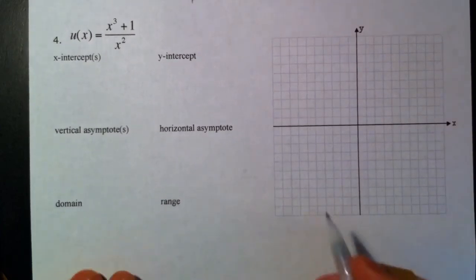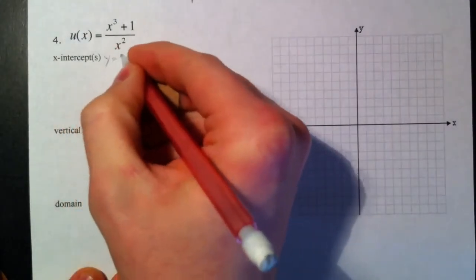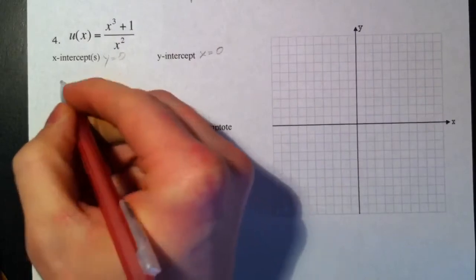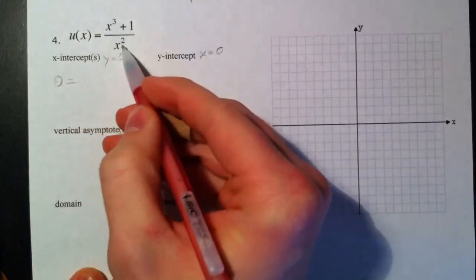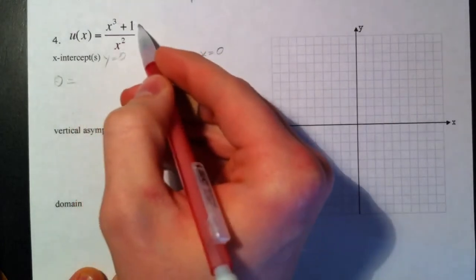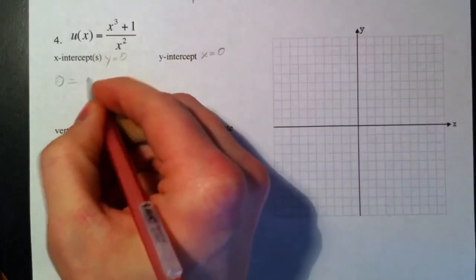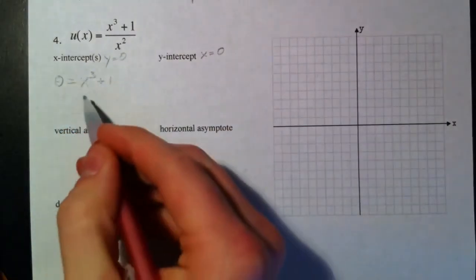All right, last example. We've got x-intercepts and y-intercepts again. Y equals 0, x equals 0. So like we talked about on the last example, the denominator doesn't matter because if the numerator equals 0, 0 divided by anything is going to equal 0. So we got 0 equals x³ + 1.